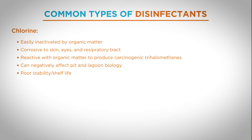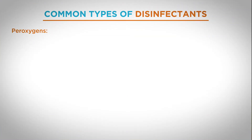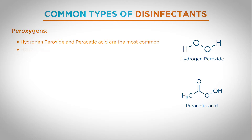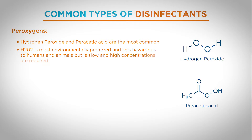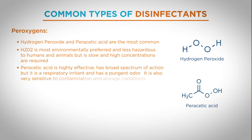Another type of disinfectant is peroxigens. The two most commonly known peroxigens are hydrogen peroxide and peracetic acid. Hydrogen peroxide is perhaps the most environmentally preferred — it is less hazardous to humans and animals, but it is slow and high concentrations are required for efficacy. Peracetic acid is much more effective as a biocide and has a broad spectrum of activity, but it is a respiratory irritant with a very strong pungent odor. It is also very sensitive to contamination by soils and storage conditions.